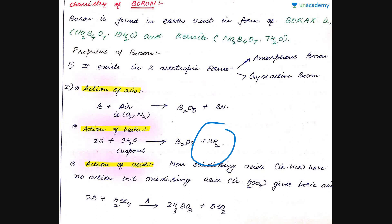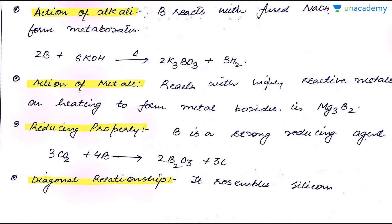On treating with acids that are mainly oxidizing acids like H2SO4, it forms boric acid, H3BO3. Next is the action of alkali. It reacts with fused alkalis, NaOH and KOH, to form metaborates such as K3BO3 or Na2BO3, and hydrogen gas is liberated. Action of metals: it reacts with highly reactive metals on heating to form metal borides like magnesium boride and calcium boride.